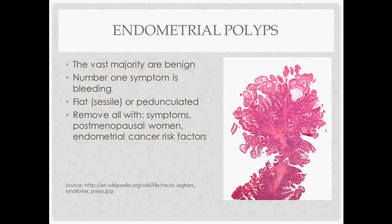The endometrial cancer risk factors fall into two categories: age, and unopposed estrogen. The factors that lead to unopposed estrogen include obesity, early menarche, late menopause, and nulliparity — all those things that give you unopposed estrogen are risk factors.